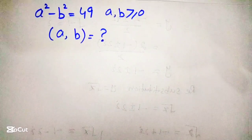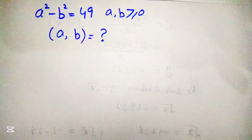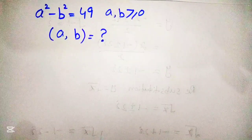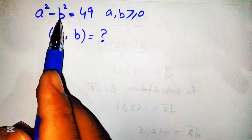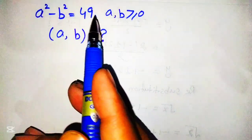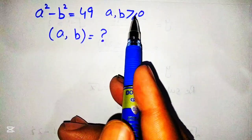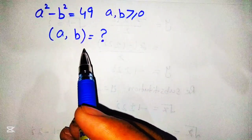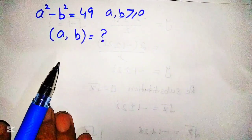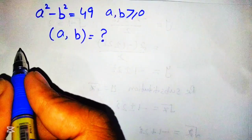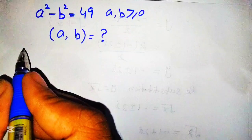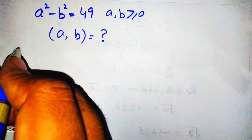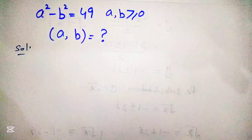Hello guys, welcome to my YouTube channel Olymped Edge. Hopefully you all are fine. Today we are going to solve a very nice equation which is given as a squared minus b squared is equal to 49, where a and b are both greater than or equal to zero, and we have to find the value of a and b. After watching this video, if you have any other easy solution of this question, please share with us in the comment section.